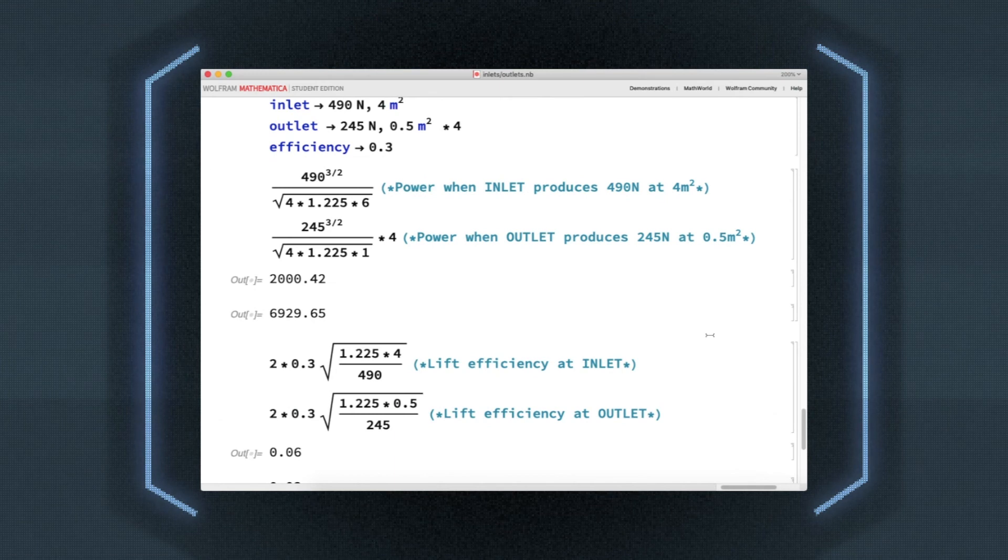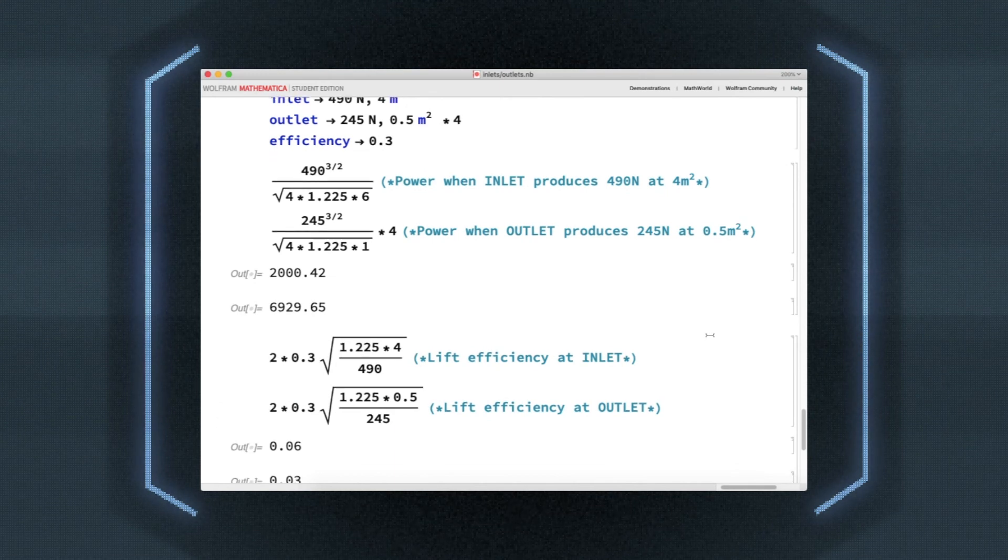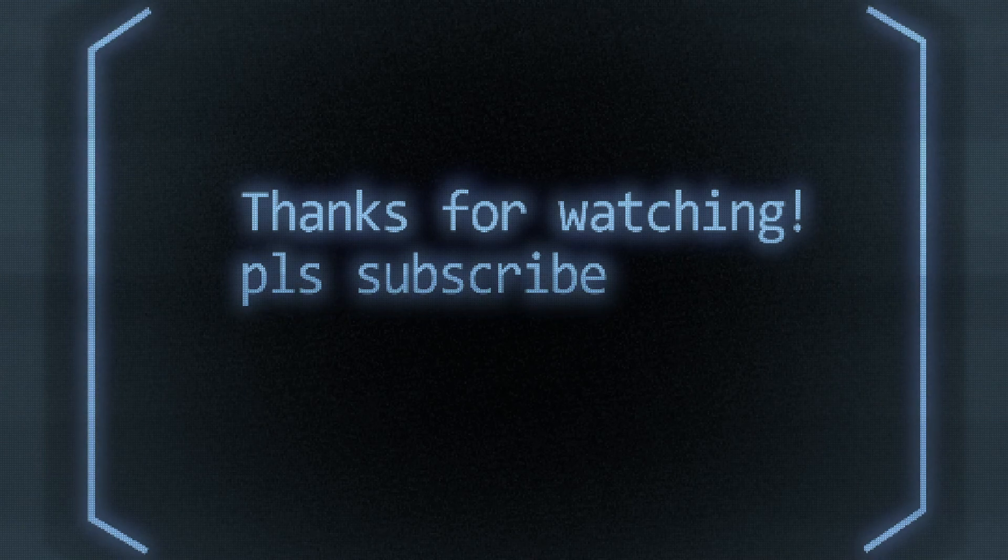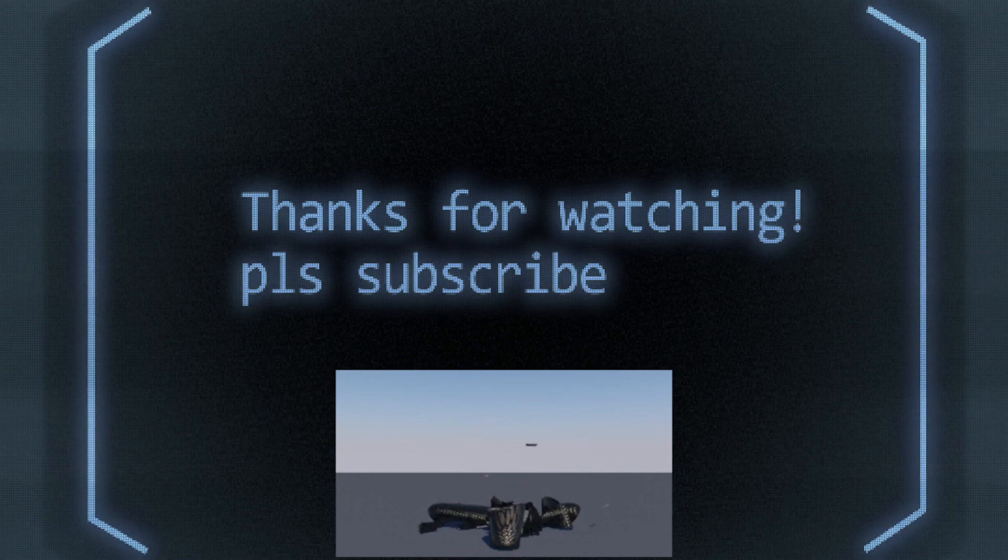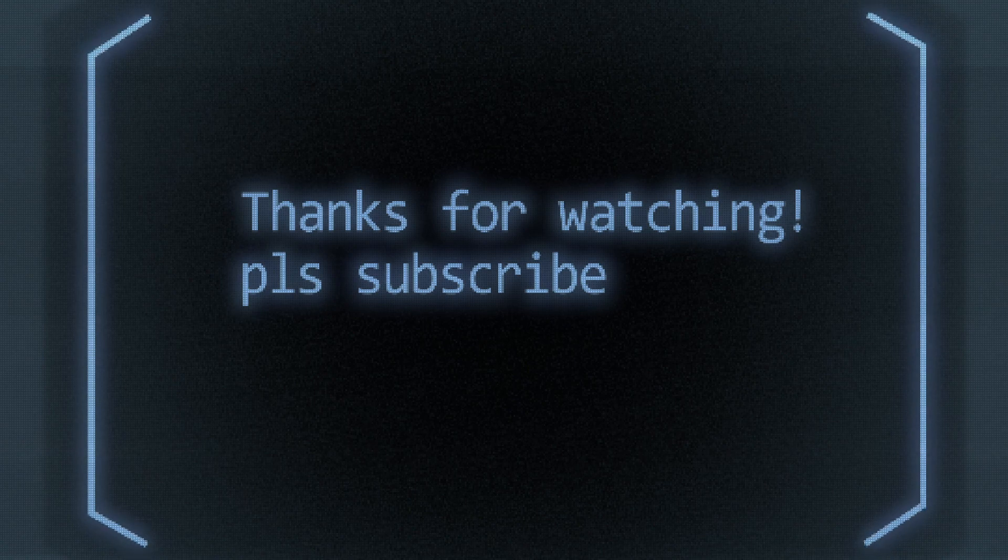I found that it costs less power to produce the 980 newtons of thrust by increasing the pressure at the outlets. So to answer the question of which setup is the best, I can say that it depends. If your aircraft can support having a few pipes, then one big lift fan is your answer, otherwise having four smaller fans could be better.